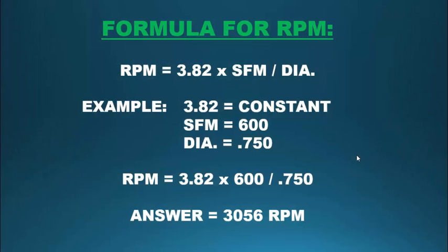The first formula I want to talk about is for calculating RPM. We take the constant of 3.82, multiply that times the surface feed per minute, and then divide it by the diameter that you're turning. In this example, we take 3.82, multiply times a surface feed per minute of 600 that was recommended by our tool manufacturer, and we're turning a diameter of 0.750.